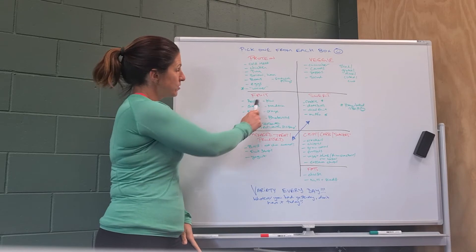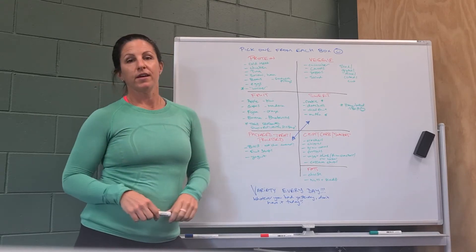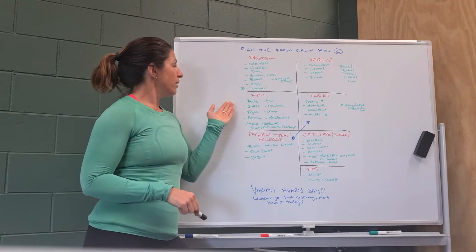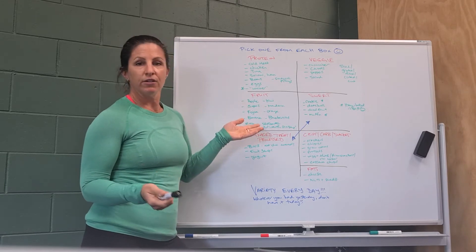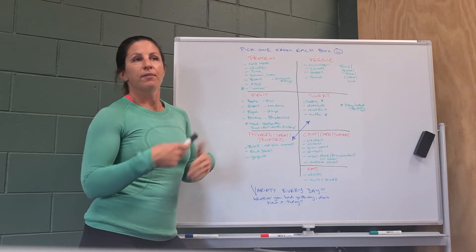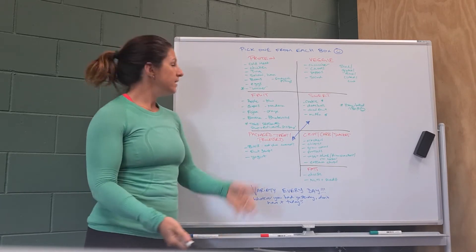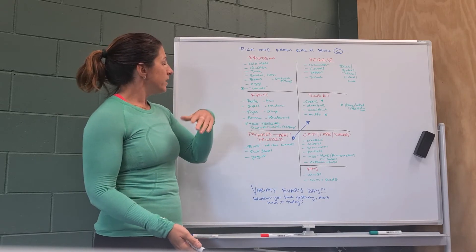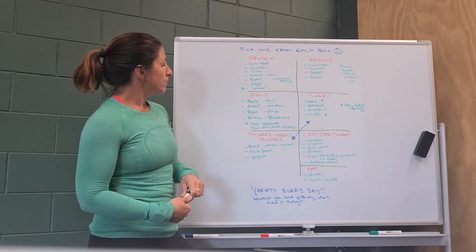Then the next one is fruit. So there's lots of fruits out at the moment. We've got apples, bananas, your standards, oranges, feijoas, kiwi, blueberries and those types of fruits.